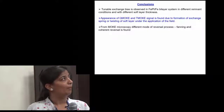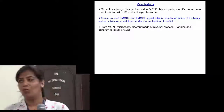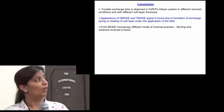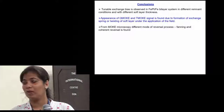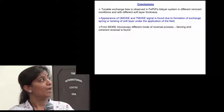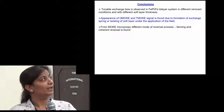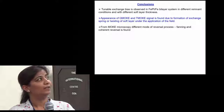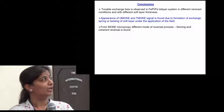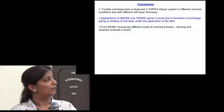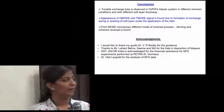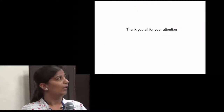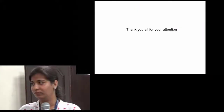To conclude: tunable exchange bias is observed in the FePt bilayer under different remanent conditions and with different iron layer thicknesses. The appearance of Q-MOKE and T-MOKE is observed due to the exchange spring, or twisting of the soft ferromagnetic layer under field application. I would like to acknowledge the following people. Thank you.